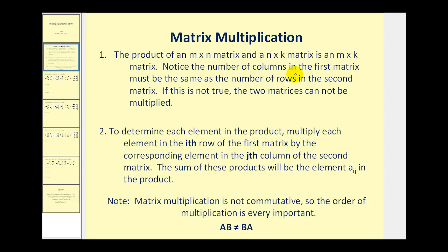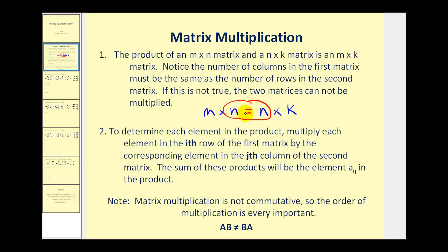Let's take a closer look at this idea. If we multiply an m by n matrix by an n by k matrix, the number of columns in the first matrix and the number of rows in the second matrix must be equal. If they're not, we cannot perform the multiplication. Secondly, the dimensions of the product will be m by k.